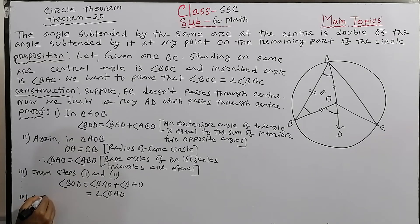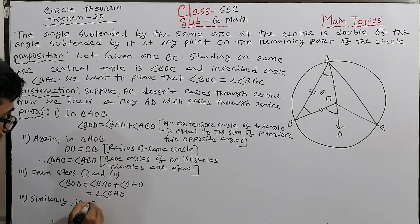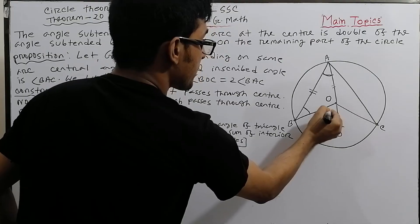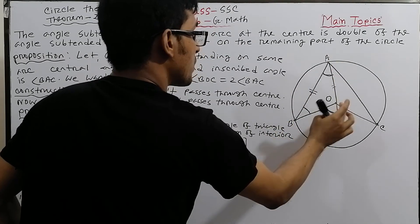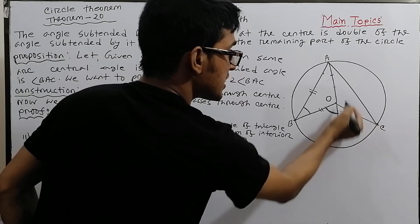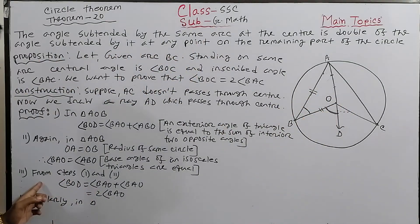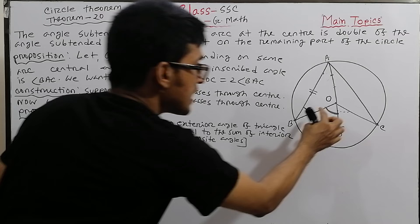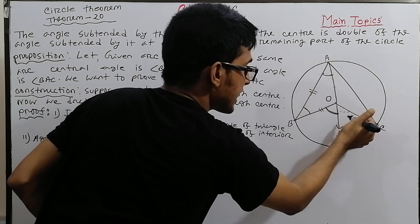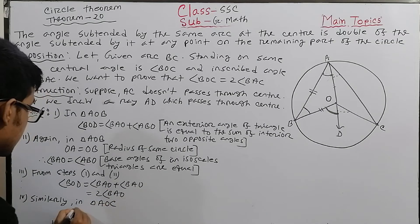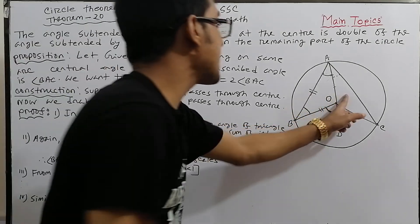Step 4: Similarly, in triangle AOC, by the same reasoning — COD is the exterior angle, and OA equals OC as radii — we get COD equals 2·CAO.